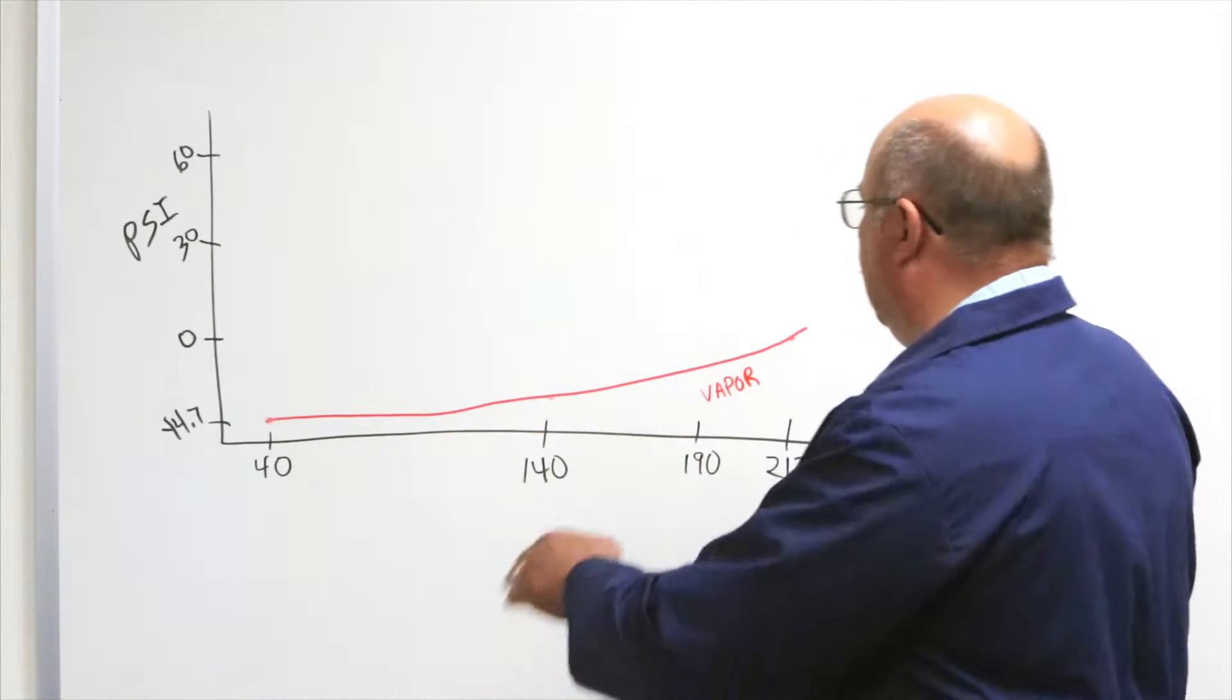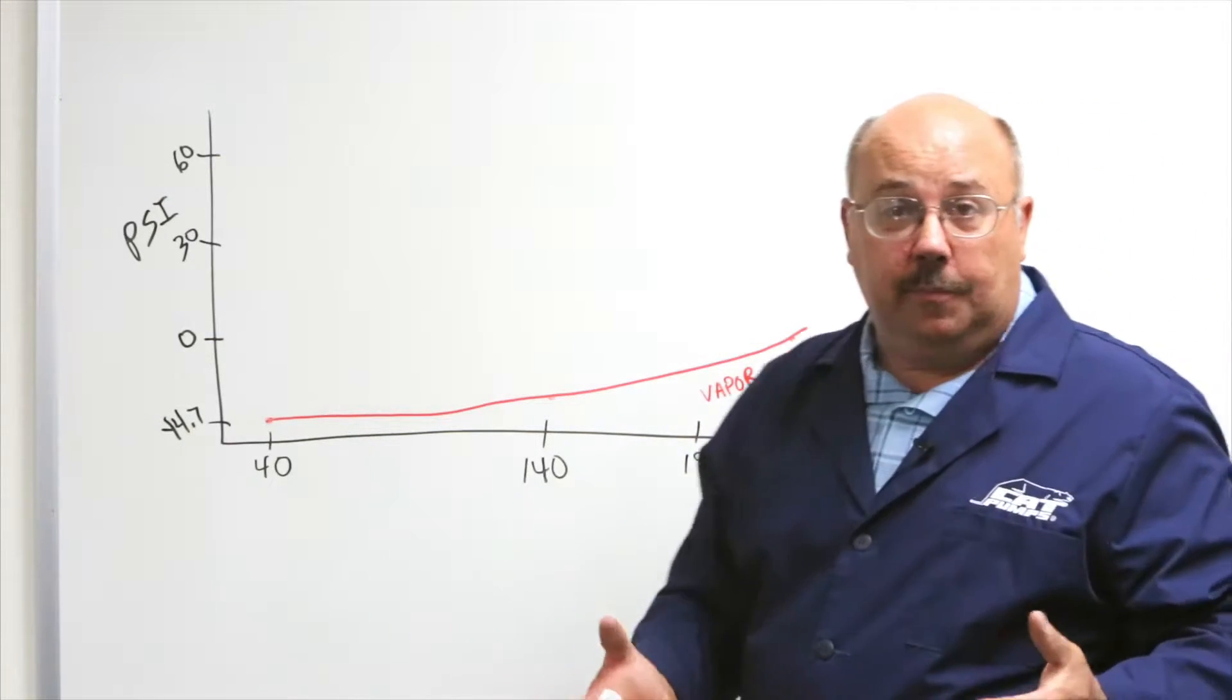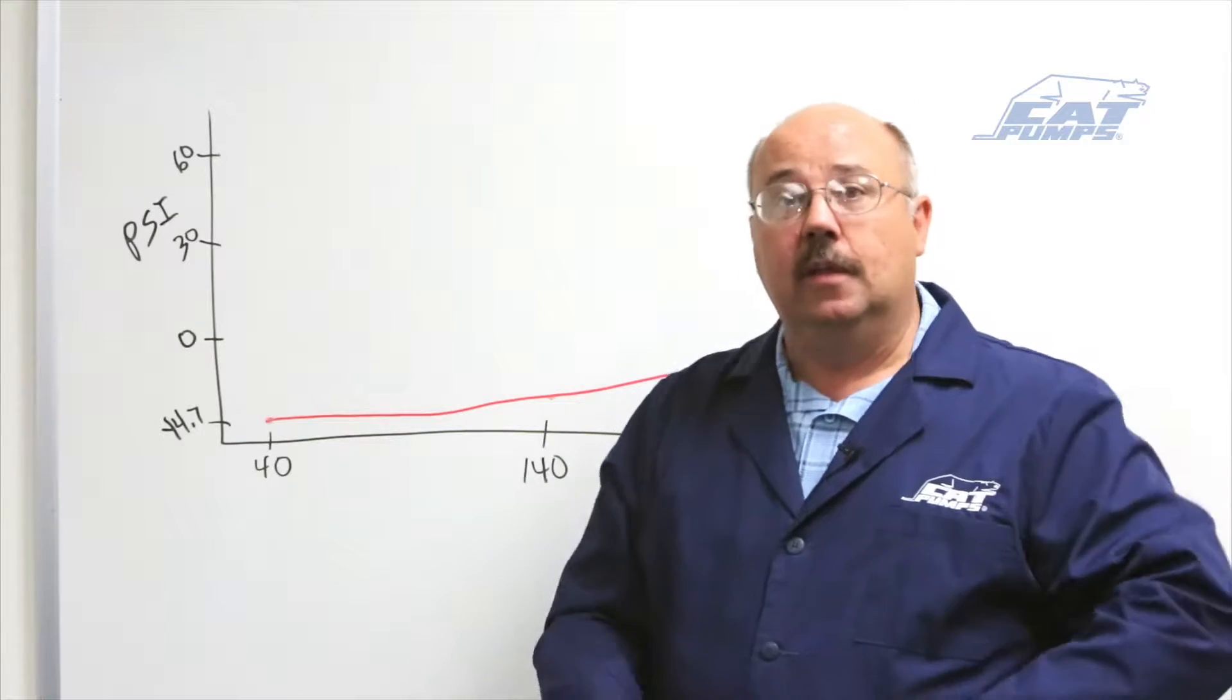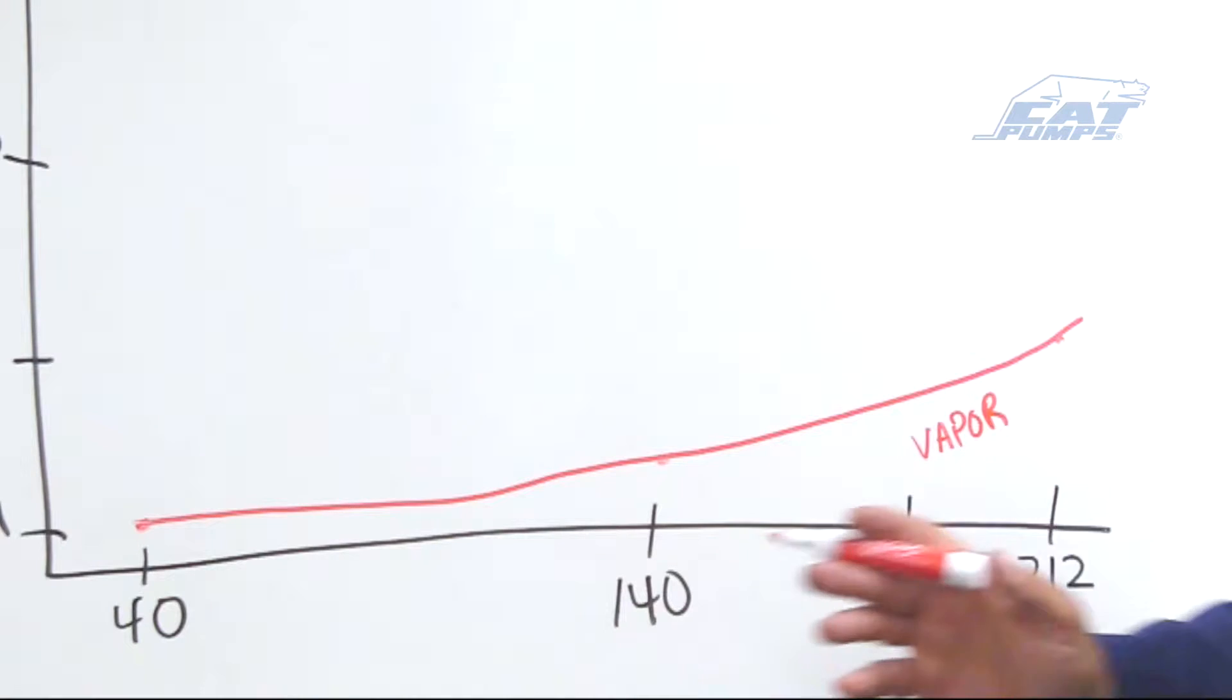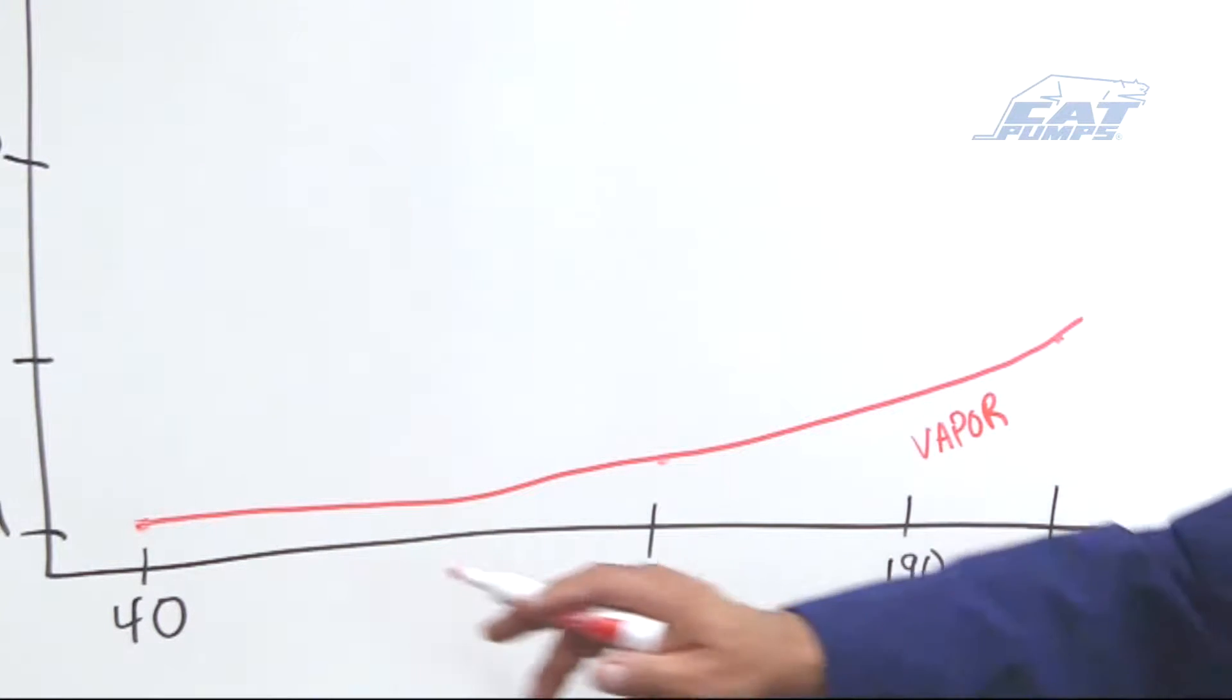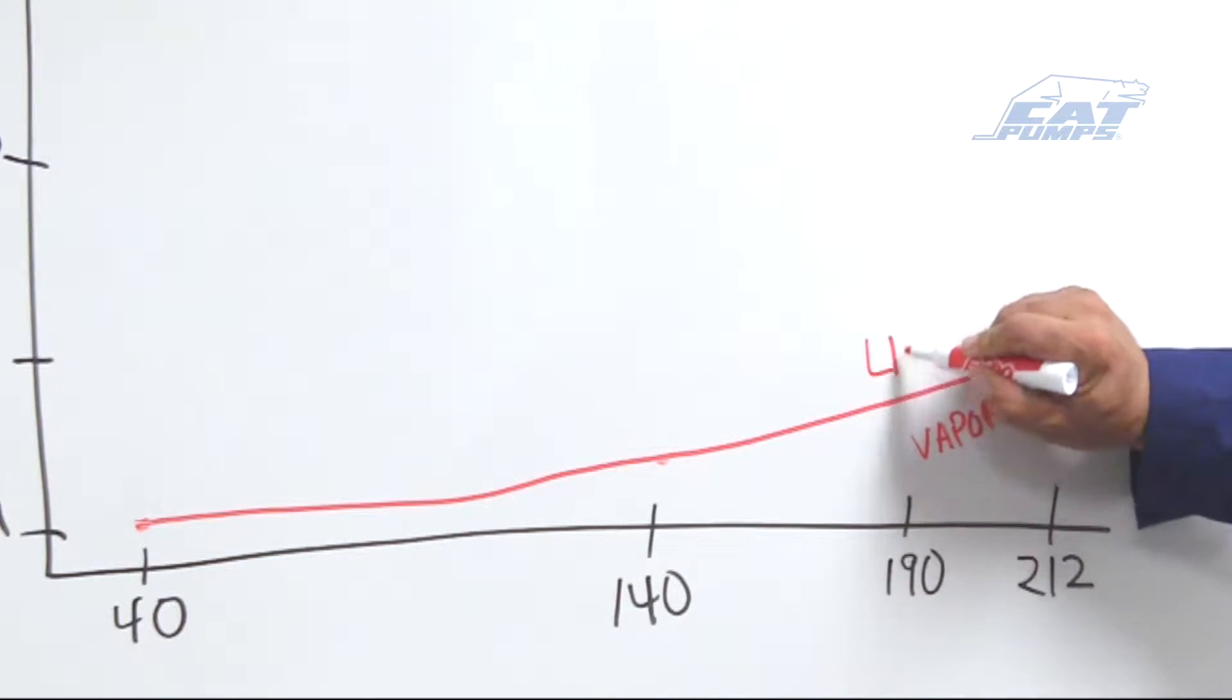So what this means that at 0 psi and 212 degrees water will boil. And we know that because we boil water on the stove with an open, with an uncovered pot, it's at 212 degrees. So this is that vapor line that we follow. And of course this is liquid above it.